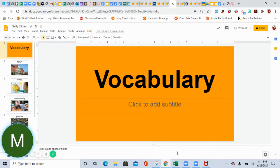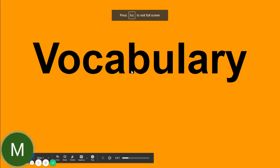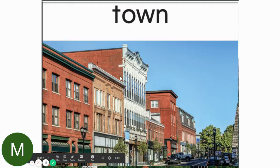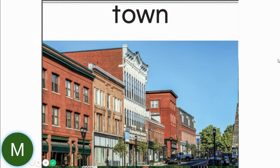Hi friends, we're going to go over the story again today and we're going to go over the vocabulary and a new anchor chart. The vocabulary is still for 'On the Map.' Remember, a town is like a smaller city. Cities like Houston, and a town is more like Katy compared to Houston, even though Katy is kind of a city too.